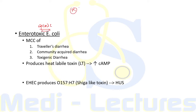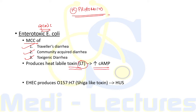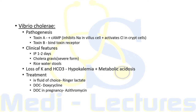Enterotoxigenic E. coli is the most common cause of traveler's diarrhea, community-acquired diarrhea, and toxigenic diarrhea. It produces a heat-labile toxin (LT) which increases cyclic AMP formation. Enterohemorrhagic E. coli produces O157:H7, which is a shiga-like toxin leading to hemolytic uremic syndrome.